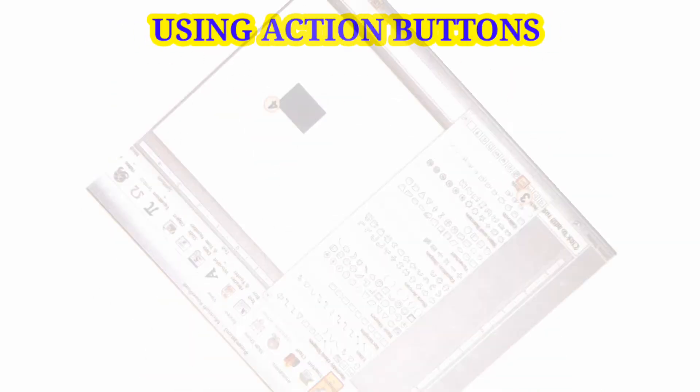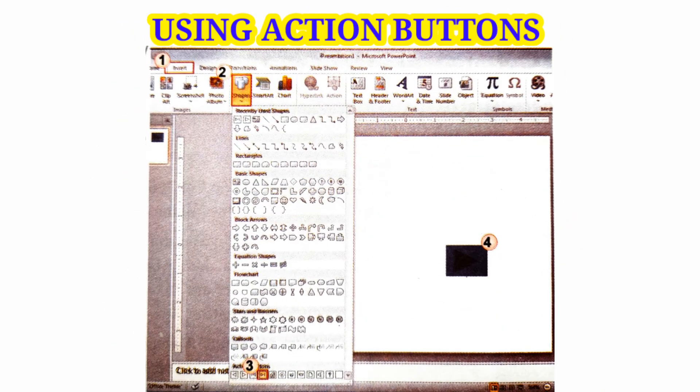Using action buttons: open an existing presentation, select the Insert tab, and click on Shapes in the Illustrations group to insert the desired shape.